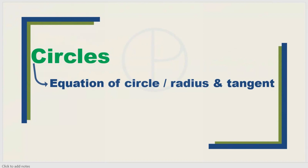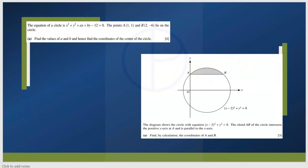Next topic is circles. For circles you will get questions about the equation of a circle, the radius of the circle, or finding the tangent of the circle. Most of the time the circle questions are combined with coordinate geometry. For example, the equation of the circle is given with two points — find the value of a and b, and find the coordinates of the center. Similarly, a circle equation is given and you need to find the coordinates of points A and B.